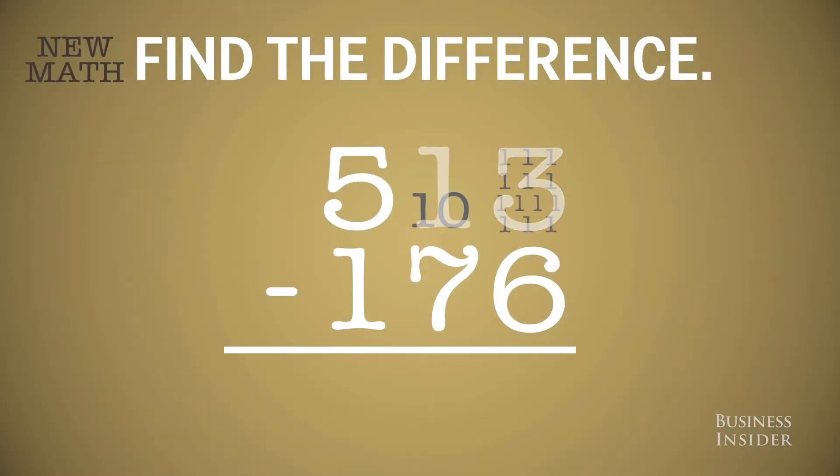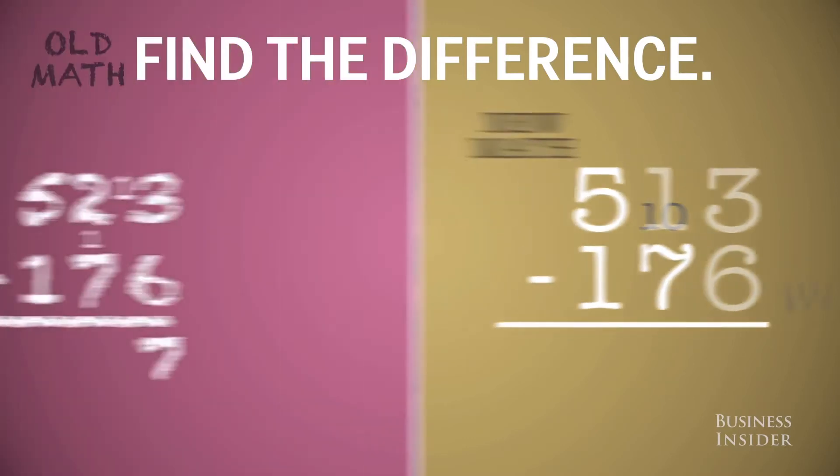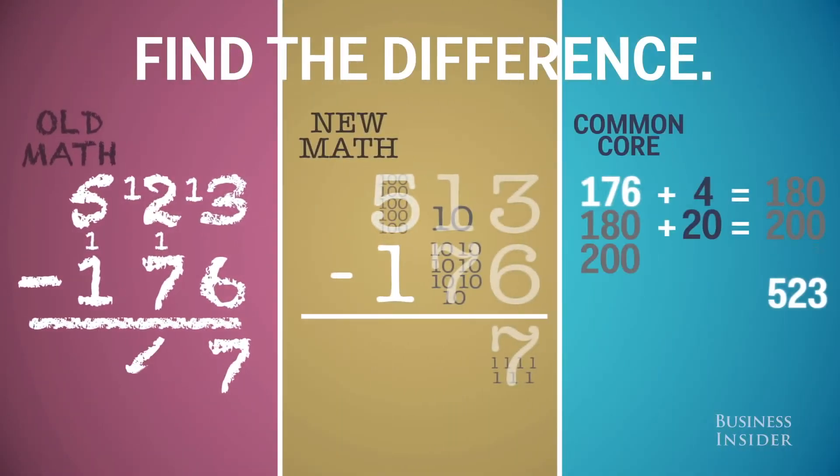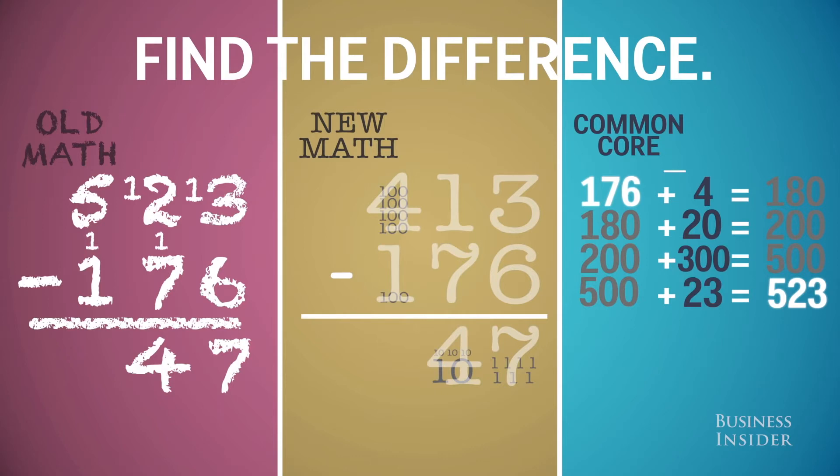When new math came along it was supposed to help students understand what they were doing. This is exactly what Common Core is trying to do now. New math was mocked for being more concerned about kids understanding the steps than getting the right answer. And this is exactly what people are complaining about with Common Core.